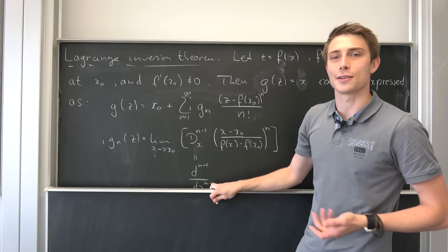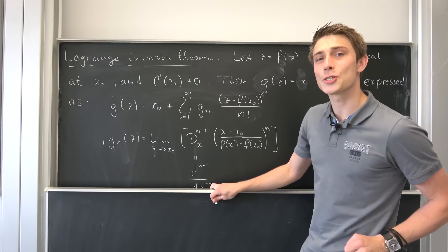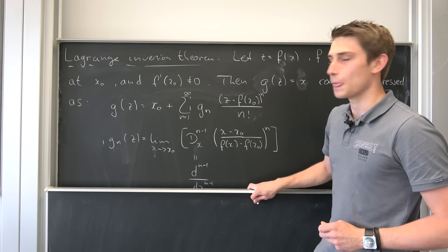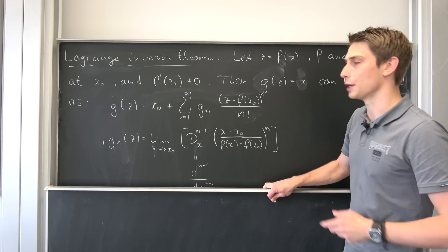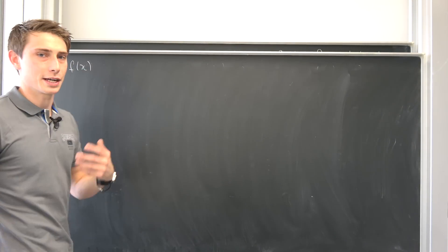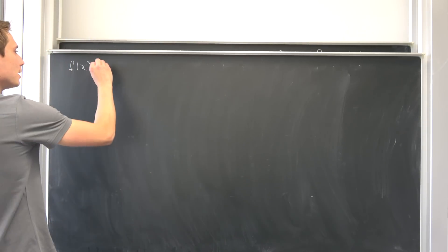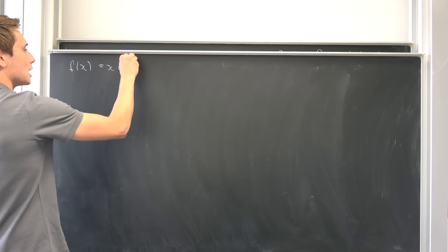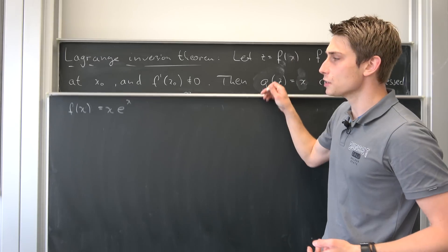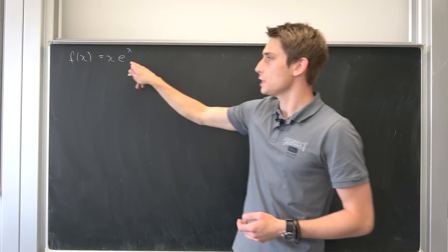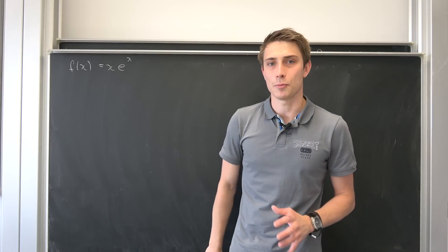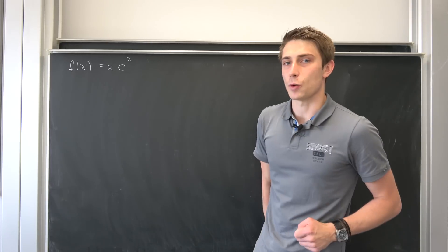Then we can calculate the Taylor series expansion for the Lambert W function, and this is quite cool. This theorem is quite powerful and it makes things way easier. So let's look at the main setup first. What is f of x exactly? It's the inverse function of the Lambert W function, and it's defined as x times e to the x. We want f to be analytical, and this function is analytical at every point.